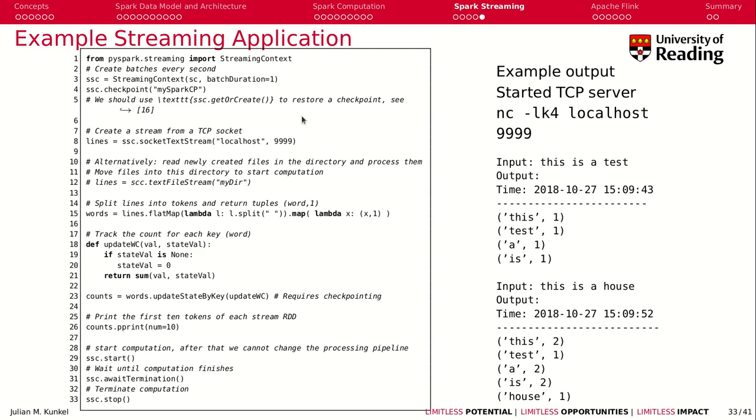Here is a more complex streaming application, in which we take a TCP port from localhost, and therefore we had to set up a streaming context. Then we define as an input, we create a socket, a TCP text stream from localhost. We split the stream using flatMap into tokens, and then we create for each word that we find one.